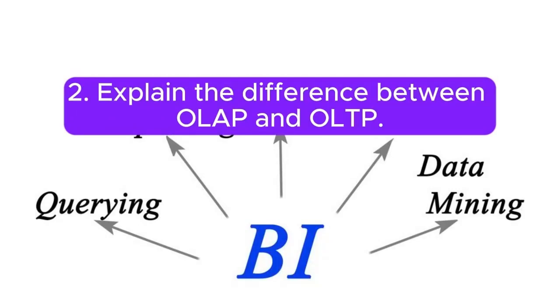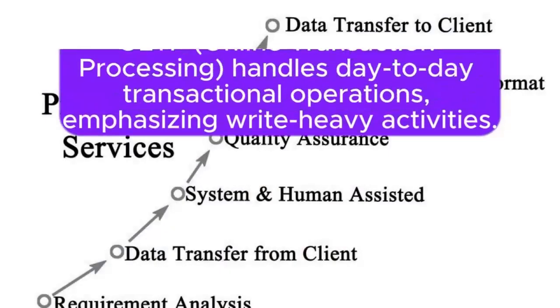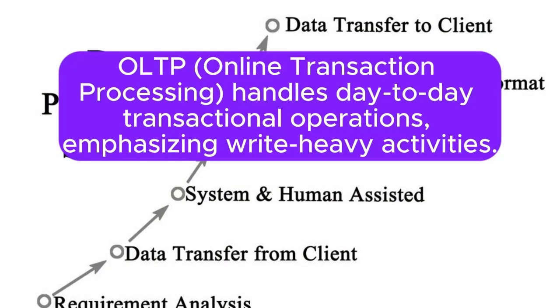Question 2: Explain the difference between OLAP and OLTP. Answer: OLAP (Online Analytical Processing) is used for complex queries and reporting in BI, focusing on read-heavy operations. OLTP (Online Transaction Processing) handles day-to-day transactional operations.